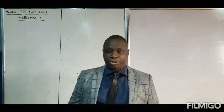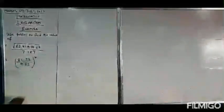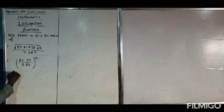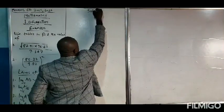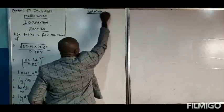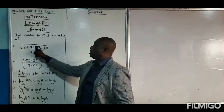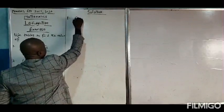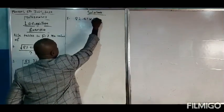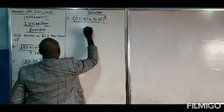We have examples here and the laws of logarithms, and we'll look at the solutions to the examples. The first thing we have to do is change this to logarithm form. If you change the numerator, the numerator is going to be 82.41 times 76.62 raised to the power of one-half, over 7.387.